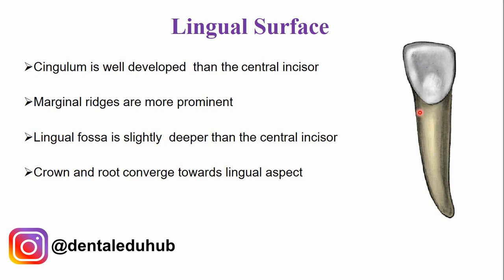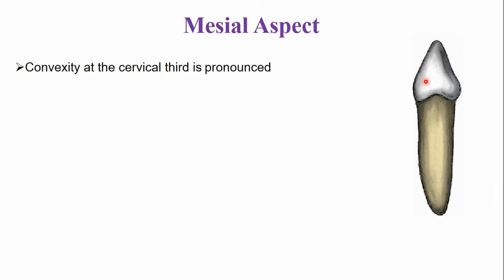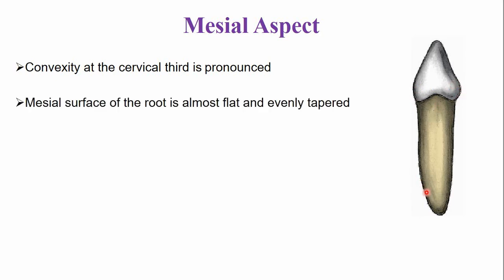Like the mandibular central incisor, the crown and the root converge, and because of this convergence you can see part of the distal and mesial surfaces from the lingual aspect. The cervical third of the crown is convex both from the labial and lingual aspects, and the convexity is more pronounced in this area. The root surface is almost flat with no developmental grooves or depressions, and the root is evenly tapered towards the root apex.